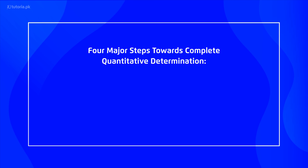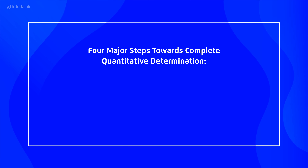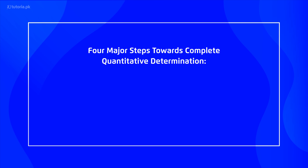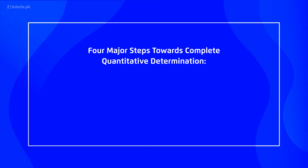دوسری بات کرتے ہیں quantitative analysis کی — جب ہم matter کو quantify کرتے ہیں، یعنی کہ کسی chemical substance میں element کتنی concentration میں present ہے۔ جیسے chapter number one میں discuss کیا کہ combustion analysis کرتے ہیں جس میں identify کرتے ہیں کہ آپ کے پاس carbon، hydrogen اور oxygen کتنی concentration میں present ہے، پھر empirical formula deduce کرتے ہیں۔ Quantitative analysis determines the amount of each component in the sample۔